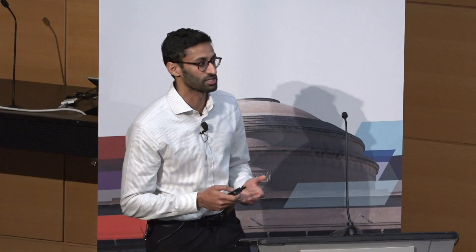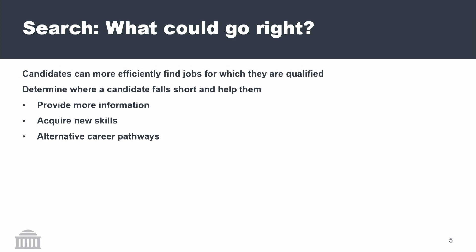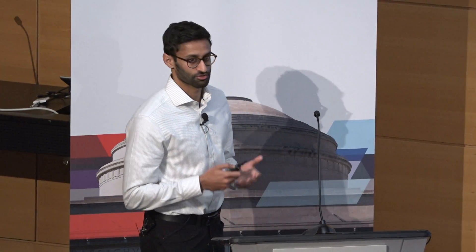This could be great — this is an inefficient market in general, and technology has made it more efficient, but there's way too many jobs and too many candidates, and search is a challenging problem. We could efficiently find candidates who are well qualified, and we can determine where a candidate falls short and help them perhaps acquire new skills or find alternative career pathways. Maybe you're not qualified for this job right now, but here's a stepping stone. This is traditionally something a career counselor might do, and it's expensive and not everybody has access to it. If we could embed that expertise in the systems we deploy, that could help people a lot.